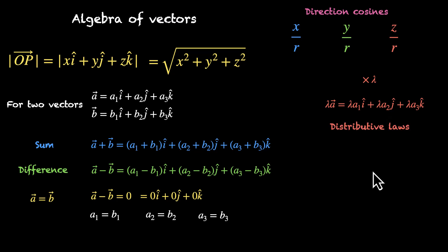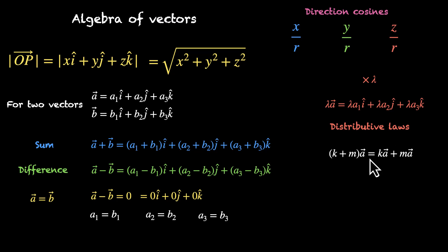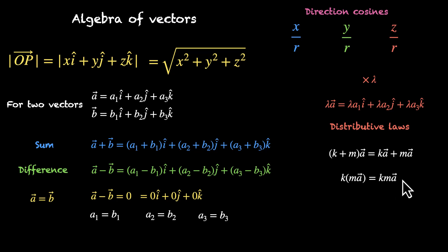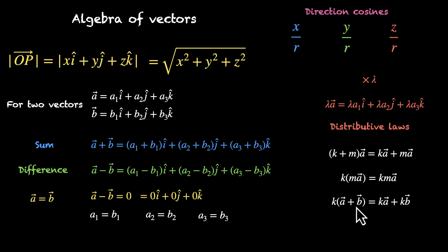The distributive laws also hold. If k and m are scalars and a is a vector, then (k + m) × a = k·a + m·a. For repeated scalar multiplication, k × m × a = (km) × a. And if you have k times the sum of two vectors, k(a + b) = k·a + k·b — the scalar k distributes over vector addition.